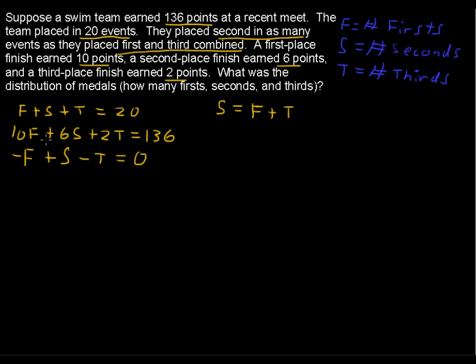Let's take the coefficients and the constants and build our augmented matrix. So we have 1, 1, 1, 20 right across the first row. Second row, we have 10, 6, 2, 136. Third row, negative 1, 1, negative 1, and 0.